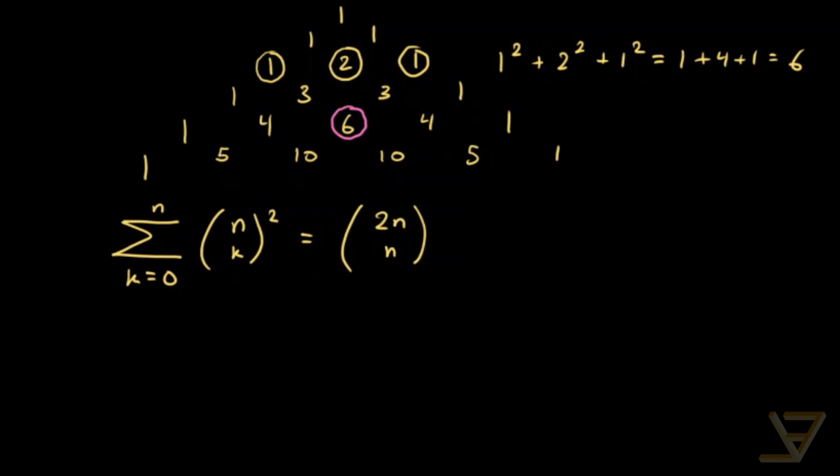So it's not immediately obvious why it's true, but it does become much clearer if we use symmetry in Pascal's triangle. What symmetry says is that n choose k is equal to n choose n minus k.